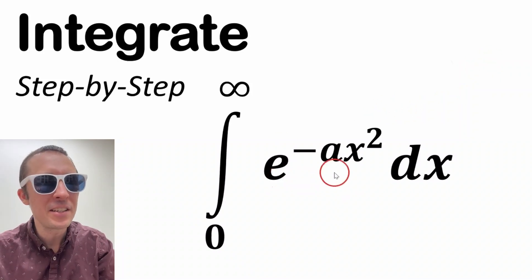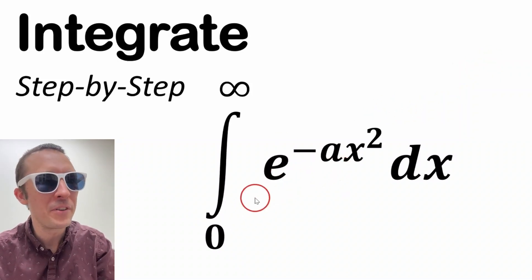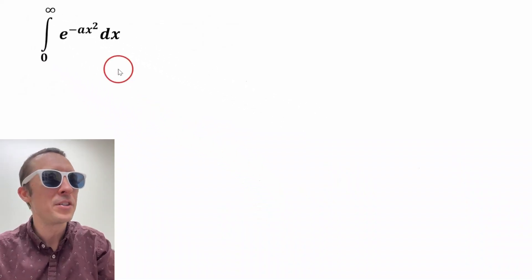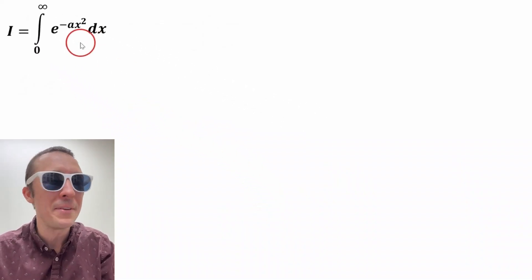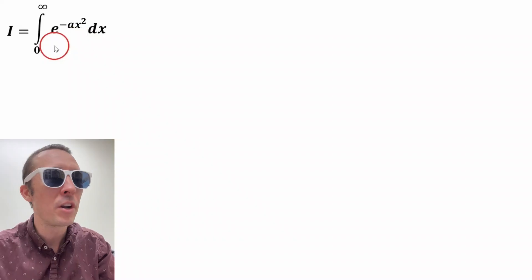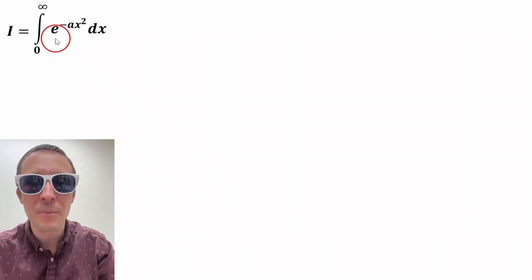My friends, we're going to integrate e to the negative ax squared from zero to infinity. It's going to be awesome. We're going to do this using polar coordinates. It's going to be very quick and dirty. If you want a longer detailed version of this, you can check out my video on that. But anyways, here we are.